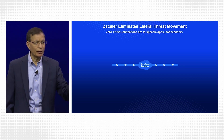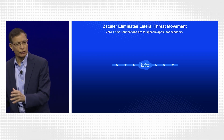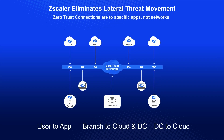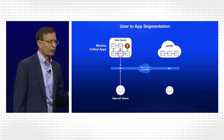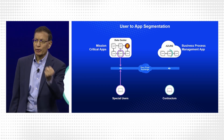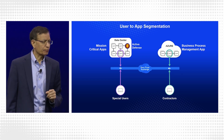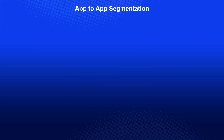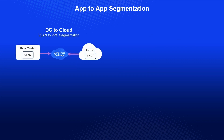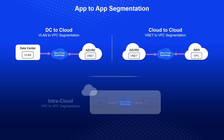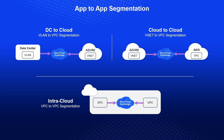To solve lateral movement, enterprises buy more firewalls and boxes to build network segments. The goal is really to adopt a zero trust architecture where you connect entity to entity rather than putting them on the network and worrying about network segmentation. You can do user-to-app segmentation so only certain users can go to certain apps. You can further do app-to-app segmentation using our cloud-connected technology where data center to cloud, cloud to cloud, and even inside the cloud connectivity is through zero trust.